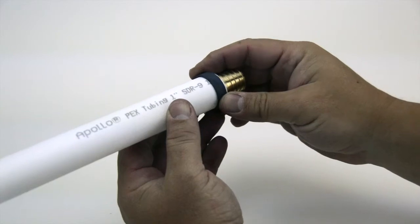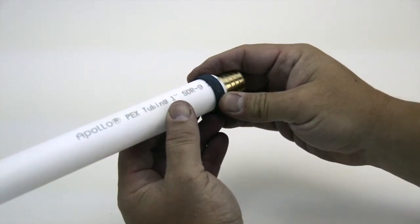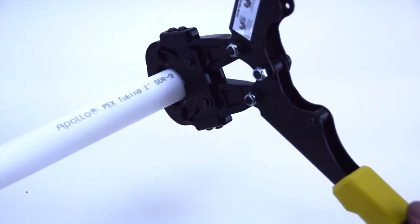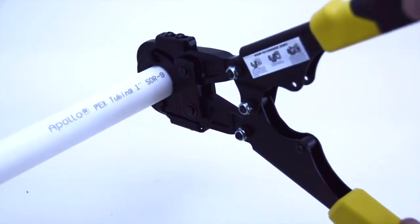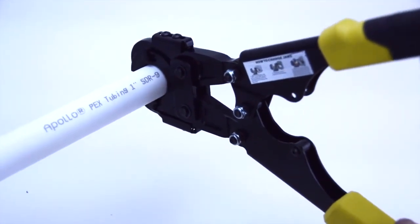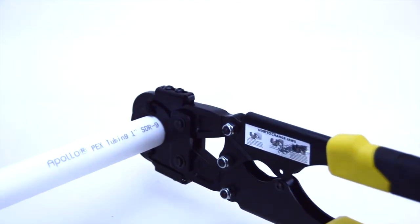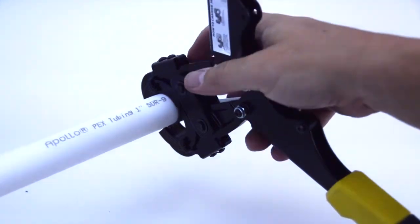Position the properly sized copper crimp ring approximately one-eighth to one-quarter of an inch away from the end of the tube around the fitting. Align the appropriate jaw opening around the crimp ring and squeeze the handles until fully closed. The connection is complete. To disengage the tool simply open the handles fully.